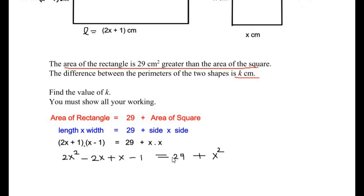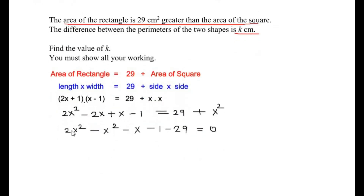Now let us gather all the terms on one side of the equation. We get 2x² minus x² gives minus x², and negative 2x plus x are like terms giving minus x, then minus 1 minus 29 equals 0. Simplifying, x² minus x minus 30 equals 0.